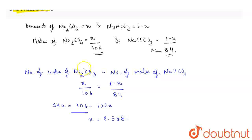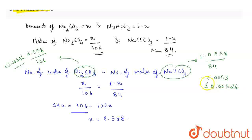Right? Therefore, moles of Na2CO3 are 0.558 divided by 106 which will give the value 0.00526. Now, moles of NaHCO3 are 1-0.558 divided by 84 which will give the value 0.0053 or we can say 0.00526.